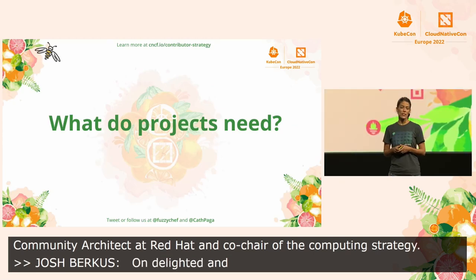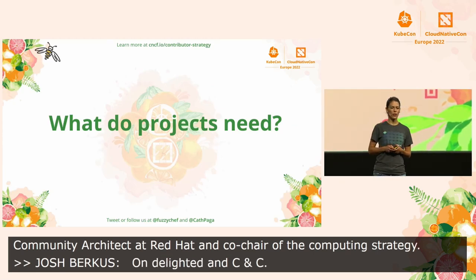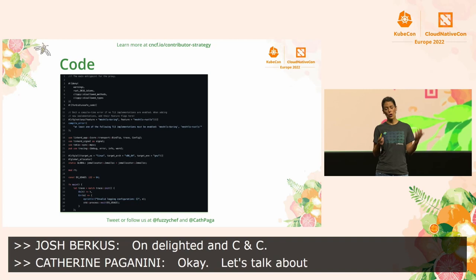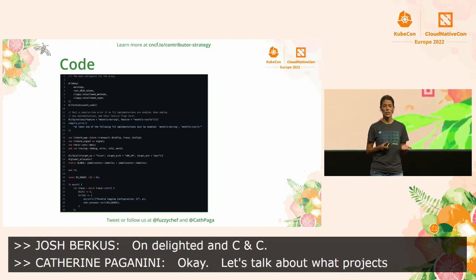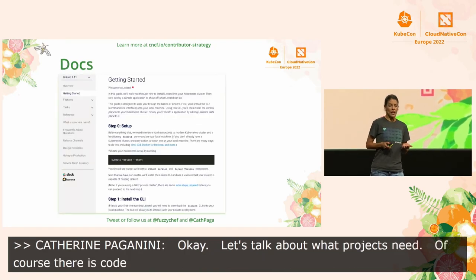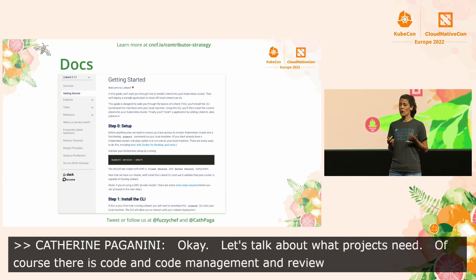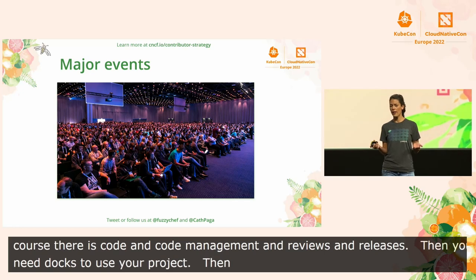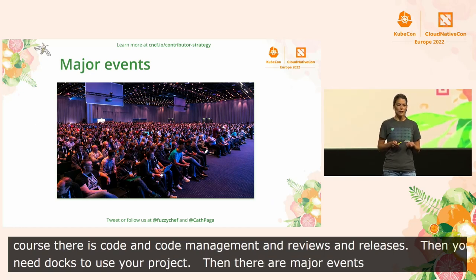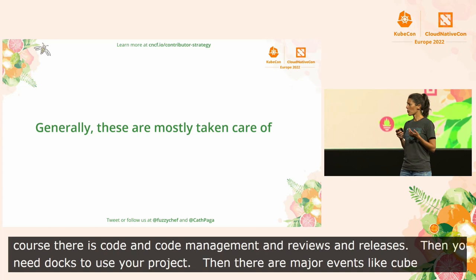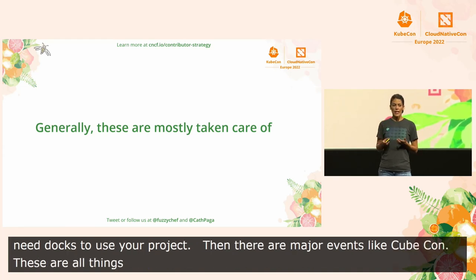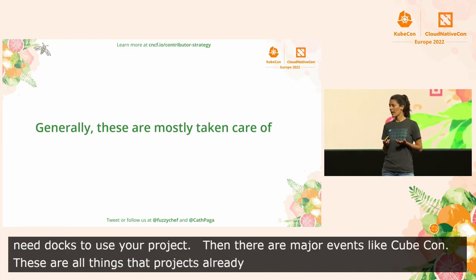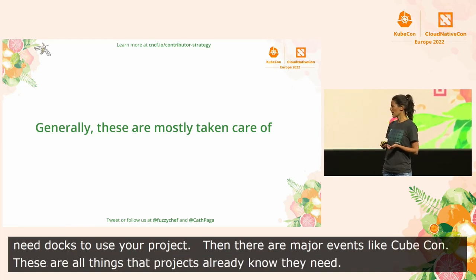So let's talk about what projects need. Of course, there's code and code management, like reviews and releases. And then you need docs, so people know how to use your project. And then there are major events, like KubeCon, where we are here today. Most projects are probably here. But these are all things that projects already know they need, and they're already taking care of this generally. But that's not everything, is it?